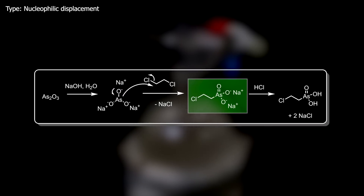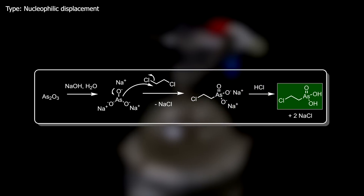This reaction isn't very efficient and the yield in the literature is only 12%. It can also eliminate the other chlorine, forming the vinyl derivative, and perhaps it could form the diarsenite. Also, dichloroethane is not a very polarized molecule, so it isn't very susceptible to this reaction. Afterward it will be acidified to form 2-chloroethyl arsenic acid.